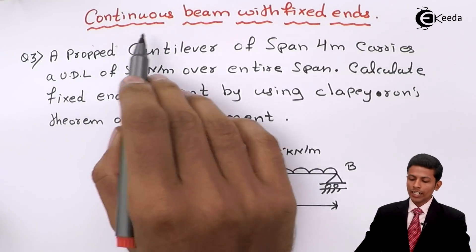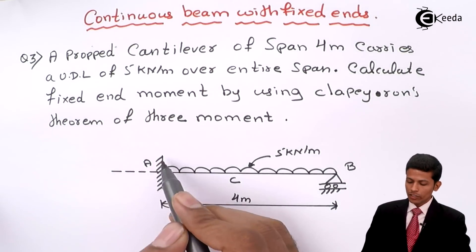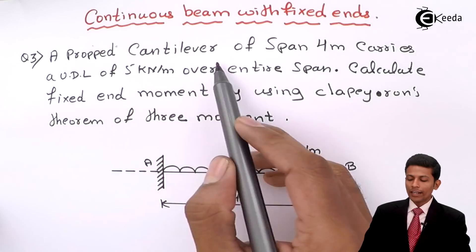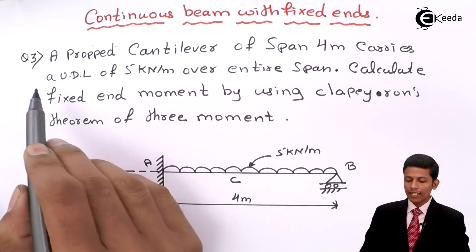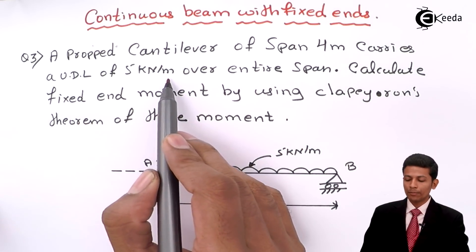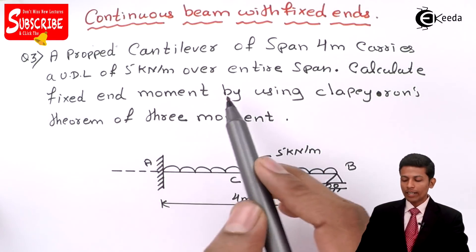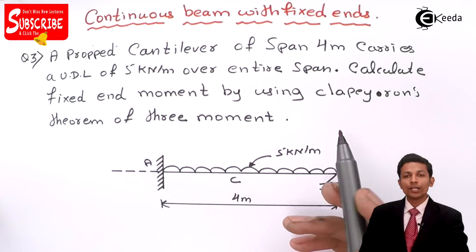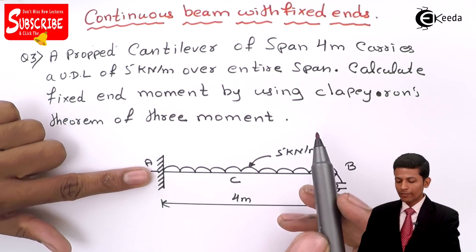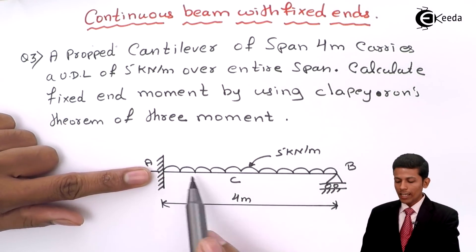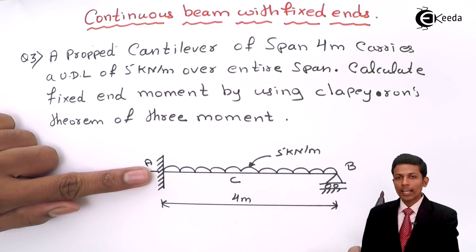Now this is the question given to us: continuous beam with fixed end. A prop cantilever of span 4 meter carries a UDL of 5 kN per meter over the entire span. Calculate fixed end moments by using Clapeyron's theorem of 3-moment. This is the diagram given to you, with points A, C and B. Now what you have to do? You have to apply the 3-moment theorem.